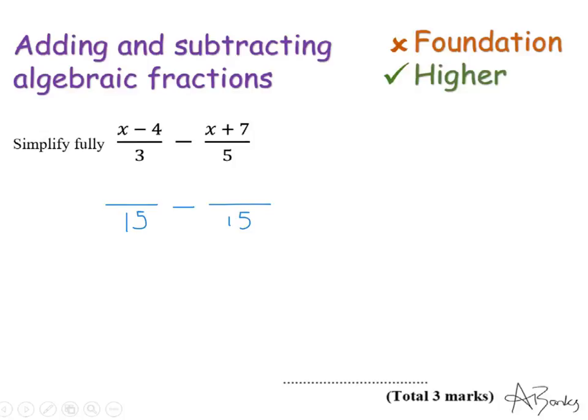So I need to multiply the numerator by 5 as well. For now I'm just going to leave it in brackets. So I'm going to do all of that multiplied by 5. And then on my second fraction, I multiply everything by 3. So that's my first step and that will get me some marks. Now I'm going to expand the numerators. This is 5x minus 20 over 15 minus 3x plus 21 over 15.